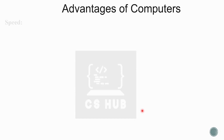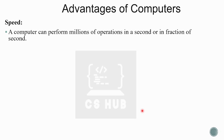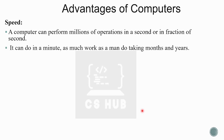The next point is speed. The computer can perform millions of operations in a second or in a fraction of a second. It can do in a minute as much work as a man would take months and years to complete.